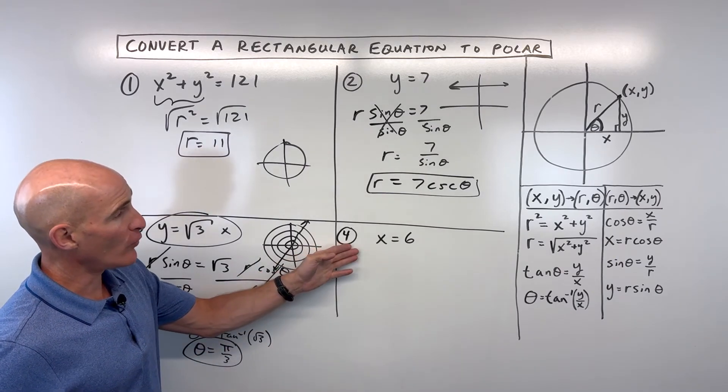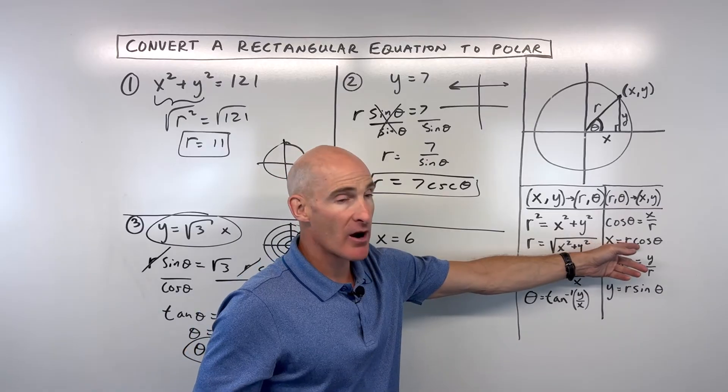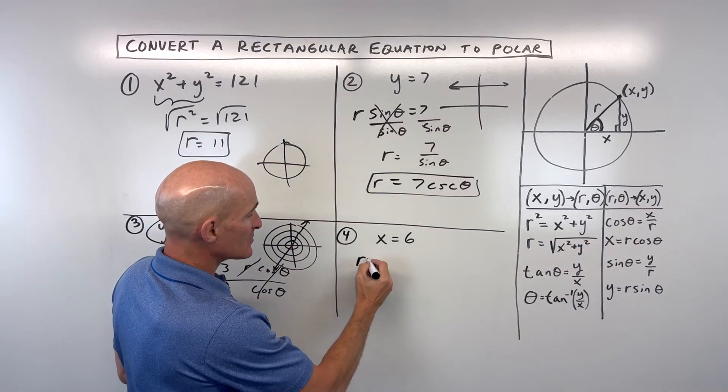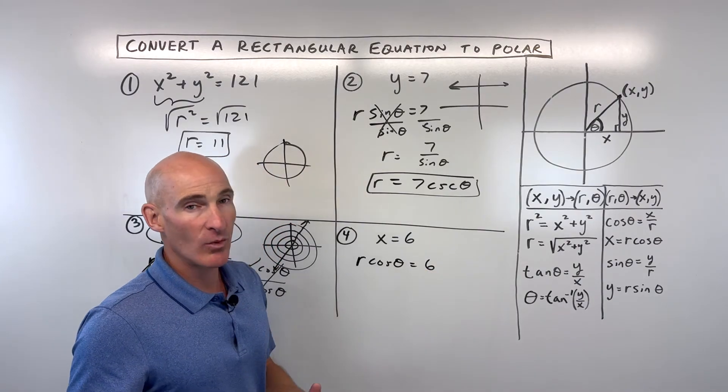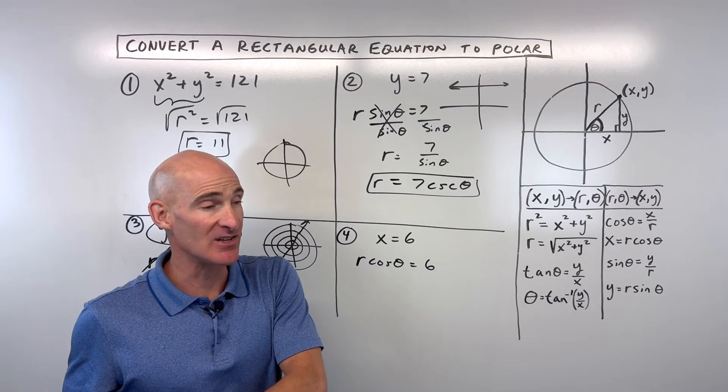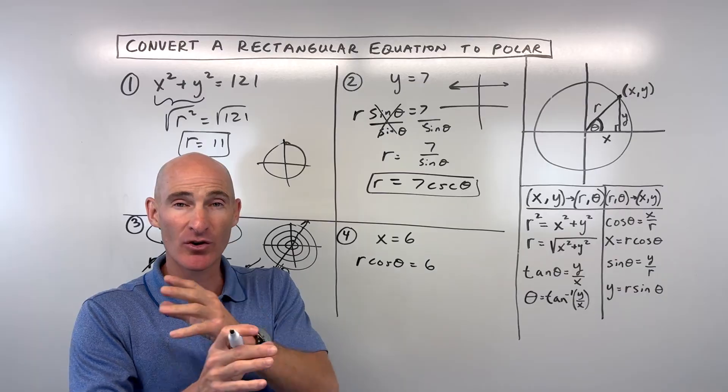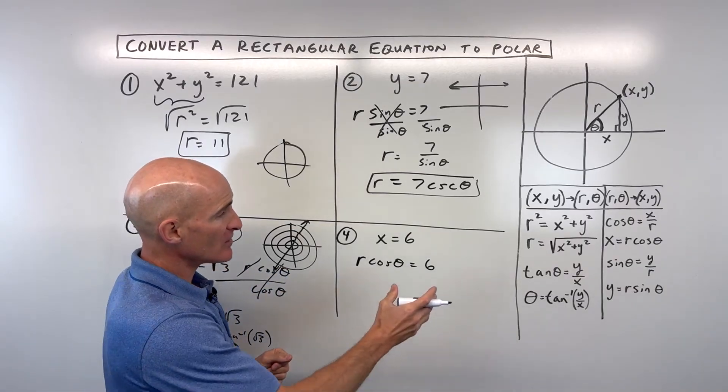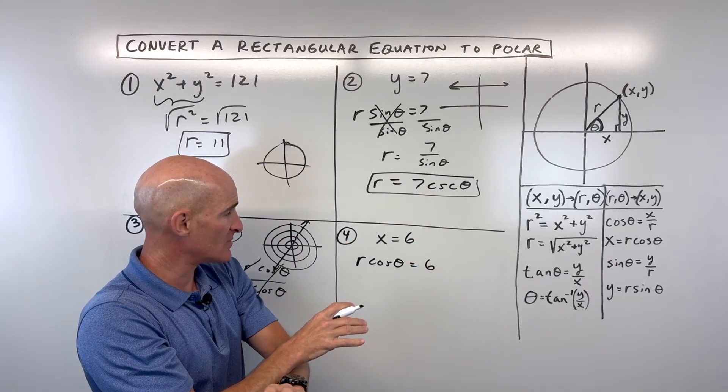And then the last example, number 4, very similar to number 2. We know that x equals r cosine theta, so let's make that substitution. Now, sometimes students will say, Mario, how do I know what to do? Well, just remember, you're trying to get rid of x's and y's. You only want r's and thetas. So it's just like when you do the trig identities. You made substitutions. They're equivalent. We're doing the same thing here. These are all identities. Left side's identical to the right. We can make a substitution.